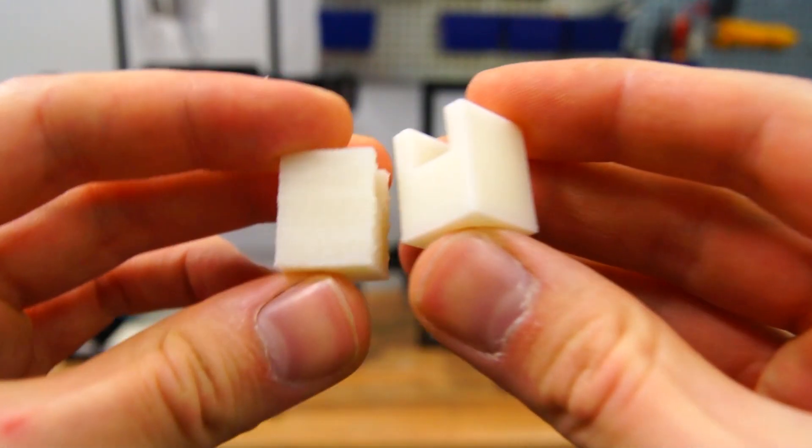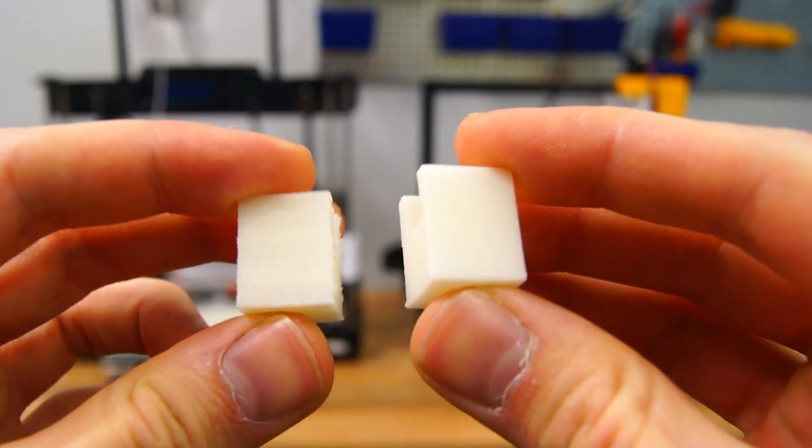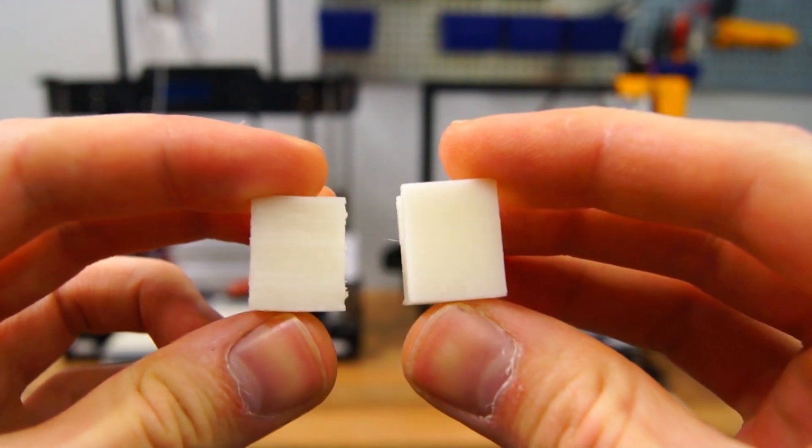You have the N88 on the left and the Tarantula on the right. I think it's safe to say that the Tarantula performed slightly better regarding print quality.